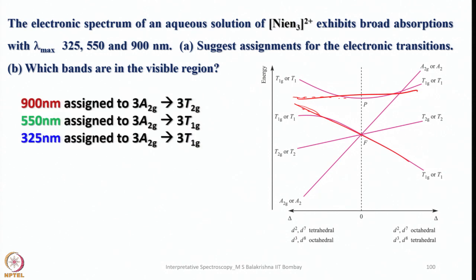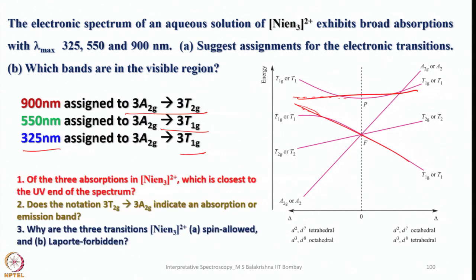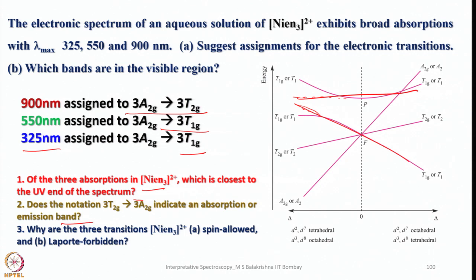You can always write here these 3 transitions. Of course, here the energy of this one drops here and then increases here. That doesn't matter - the question is assignment. You should be able to assign once you identify the ground state and then 3 other states: one due to P and two due to F, excluding the ground state of F system. Which bands are in the visible region? 900 nanometer assigned to 3A2g to 3T2g, 550 assigned to 3A2g to 3T1g, and 325 assigned to 3A2g to 3T1g. This is how you can identify and assign the values. Of the 3 absorptions, which is closest to the UV end of the spectrum? Does the notation 3T2g to 3A2g indicate an absorption or emission band? Why are the 3 transitions spin-allowed and dipole-allowed? These are the 3 questions you should work out.